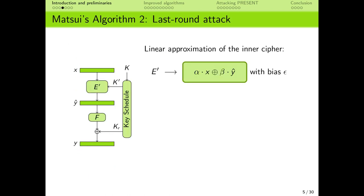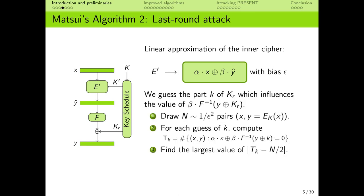We will begin by revisiting the contribution of Collard and the others. In a simple last-round linear key recovery attack, we consider a linear approximation of the cipher after removing the last round. The aim of a key recovery algorithm is, given a large enough collection of plaintext-ciphertext pairs, to guess all possible values for a part of the last round subkey, decrypt the last round for each ciphertext and key, and compute the correlation of the linear approximation for each possible guess of the key. We expect that the correct guess for the last round subkey will show the largest correlation.